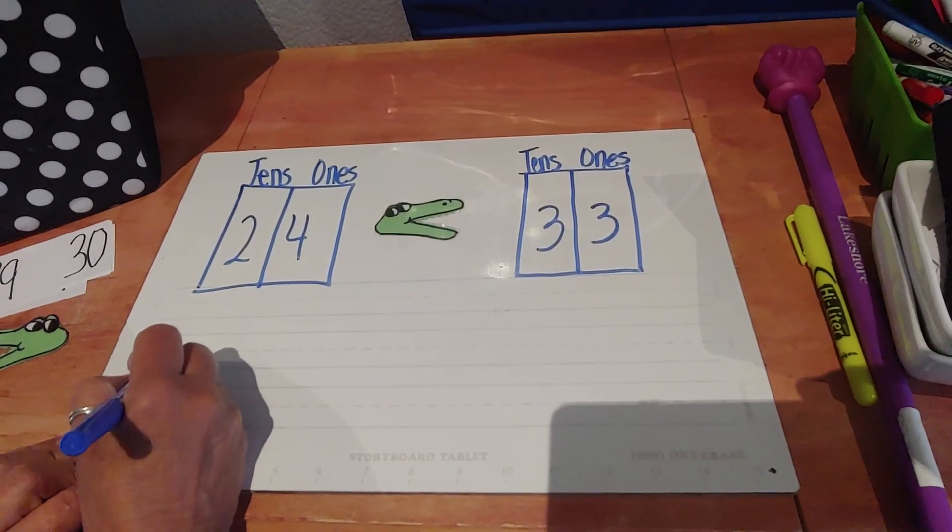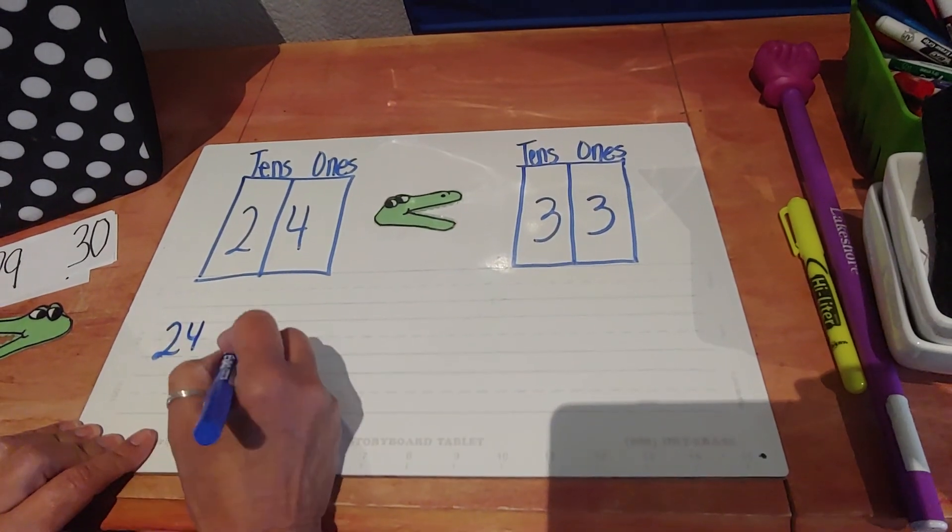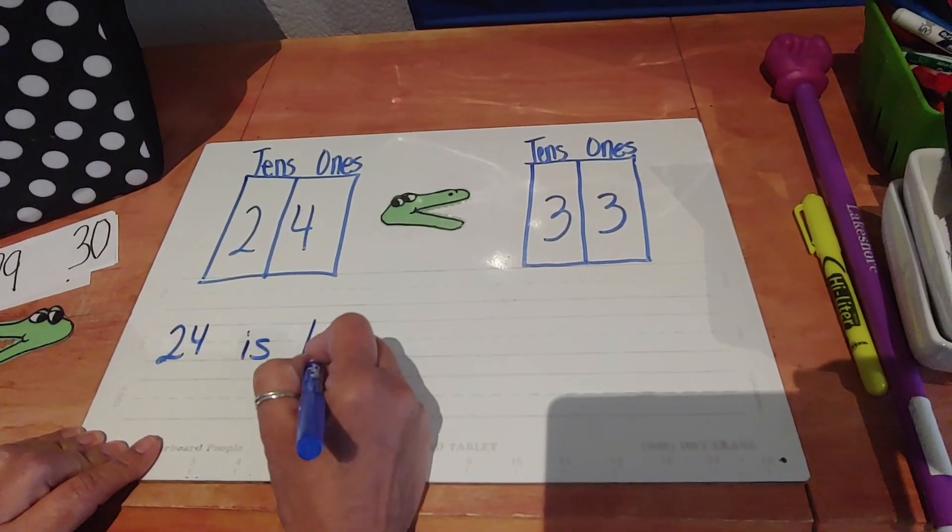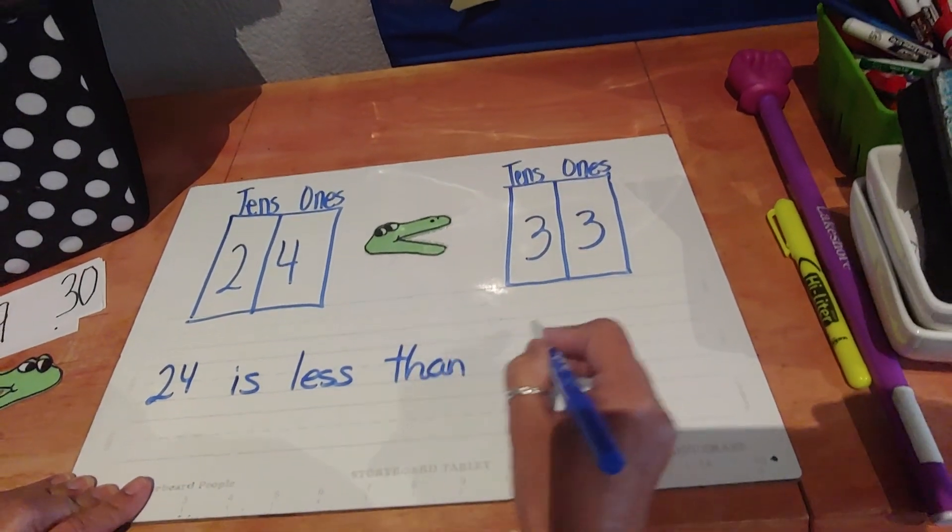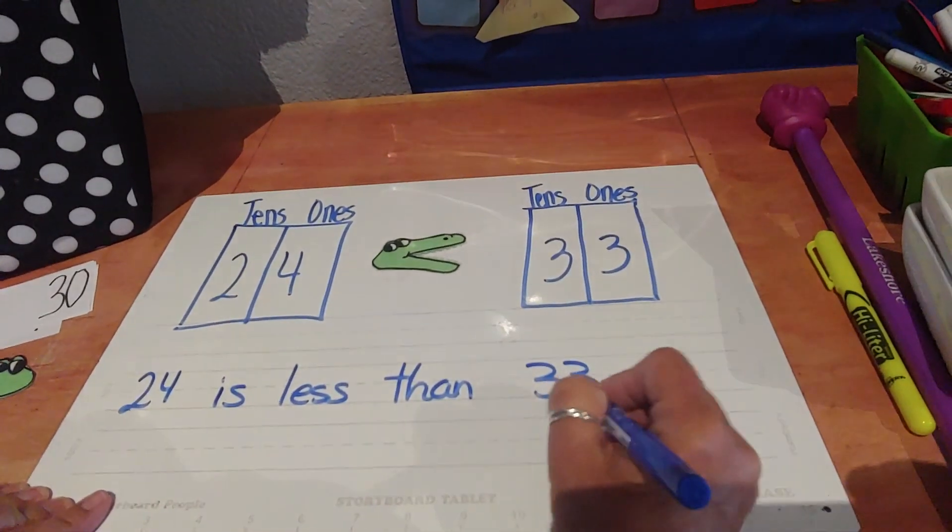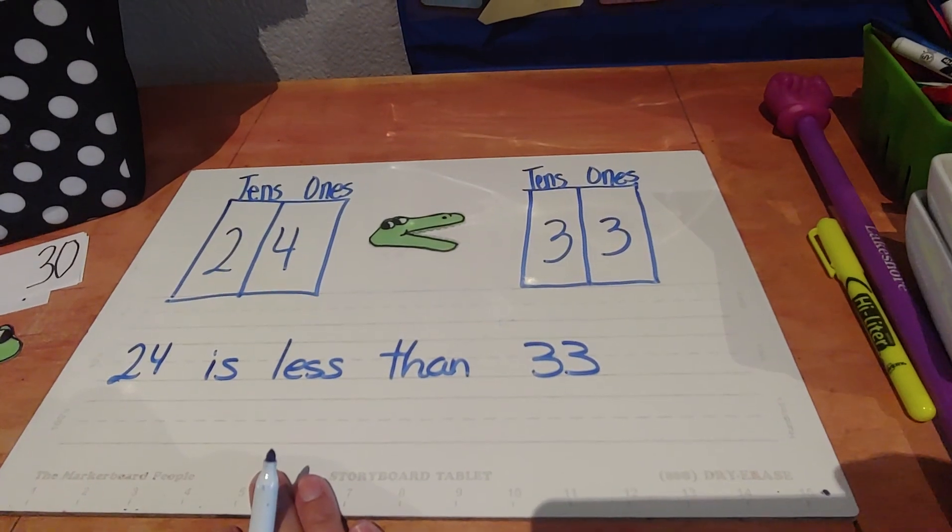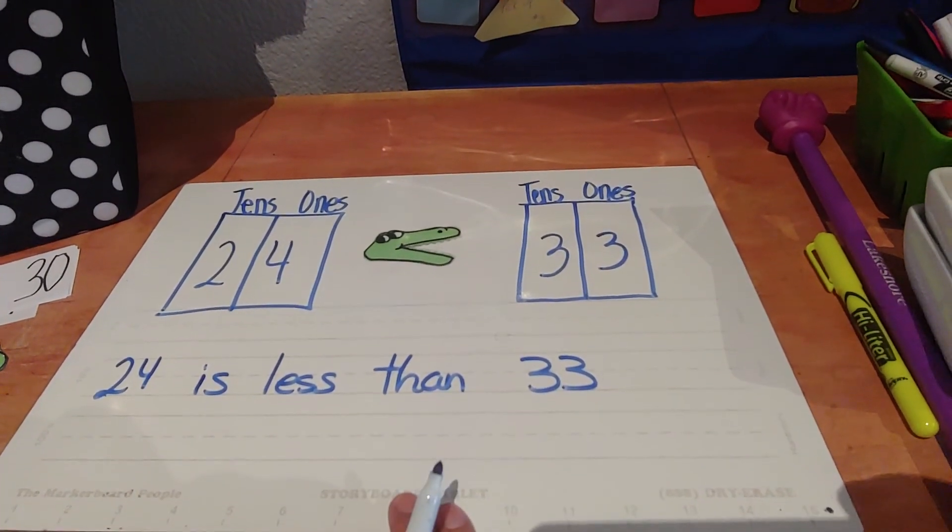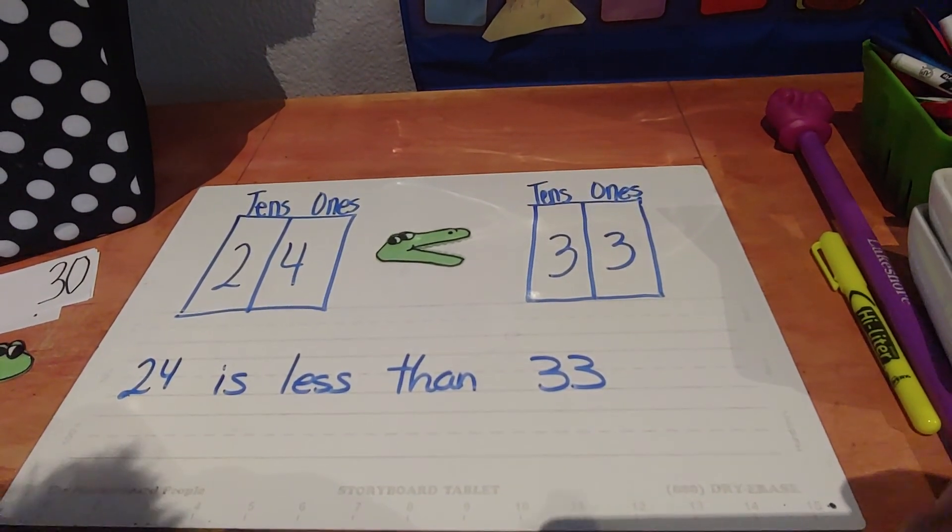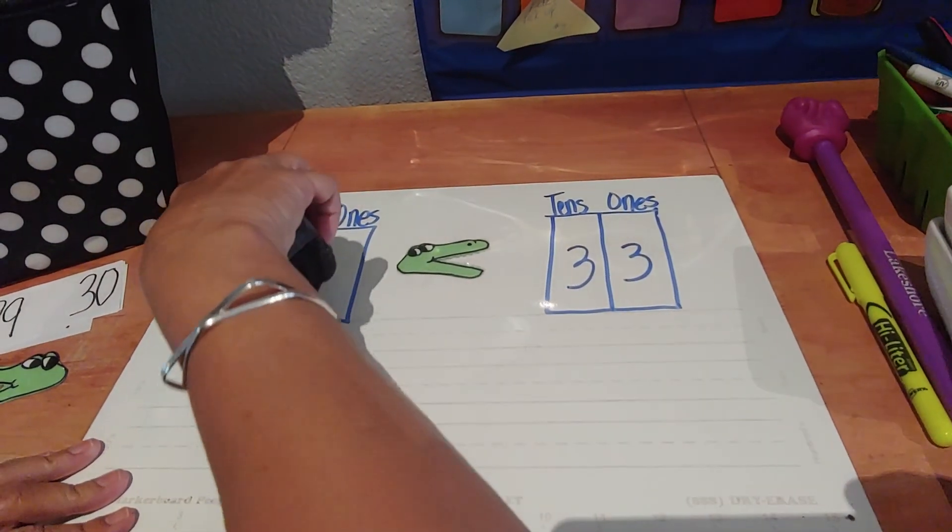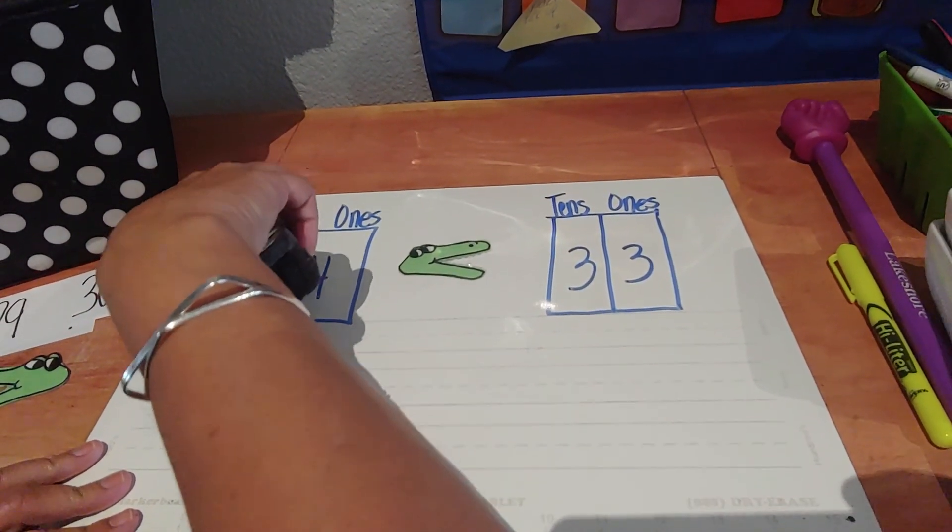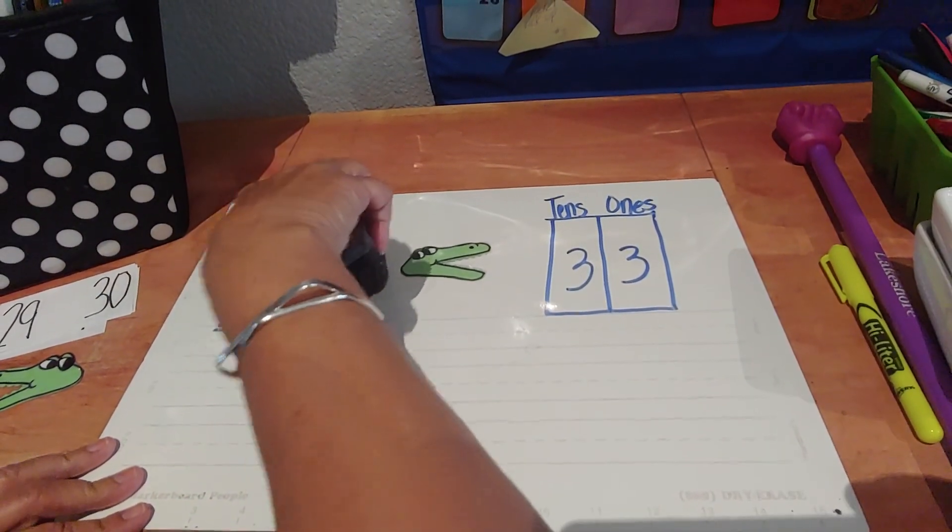So our number sentence would say 24 is less than 33. And that's how you would answer to be on your lesson nine homework. So let's do the next one underneath that problem. This is to see on lesson nine homework.